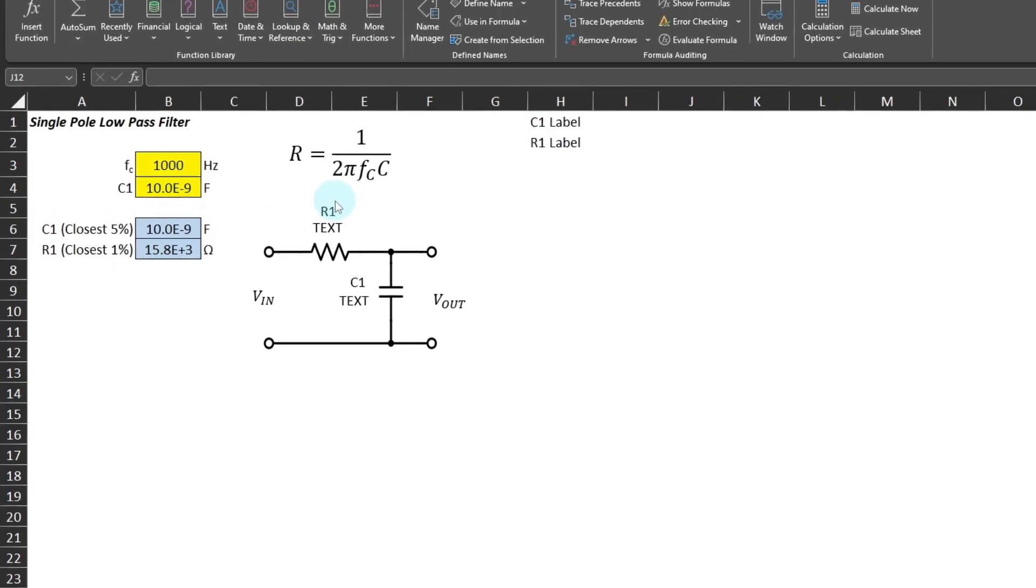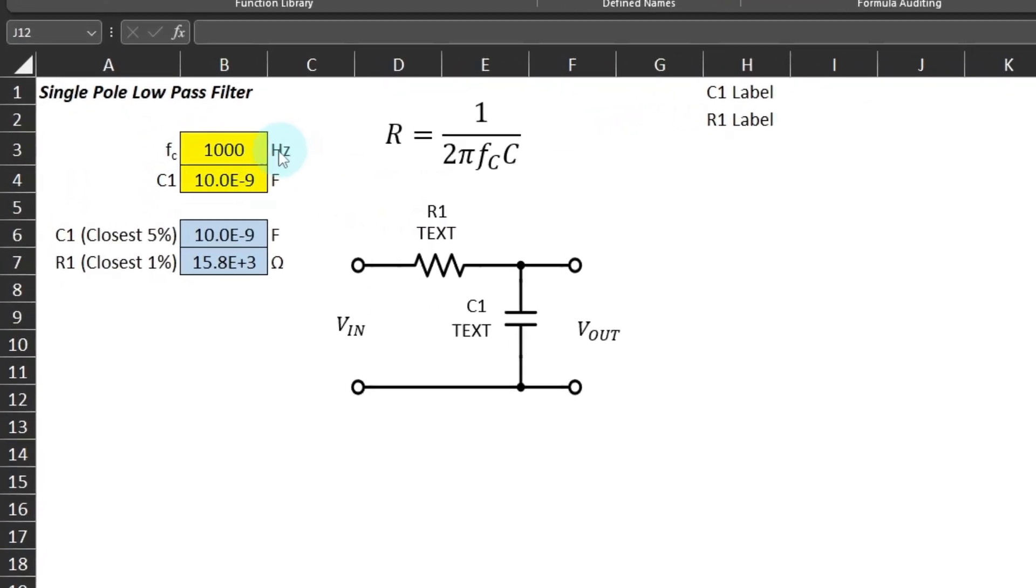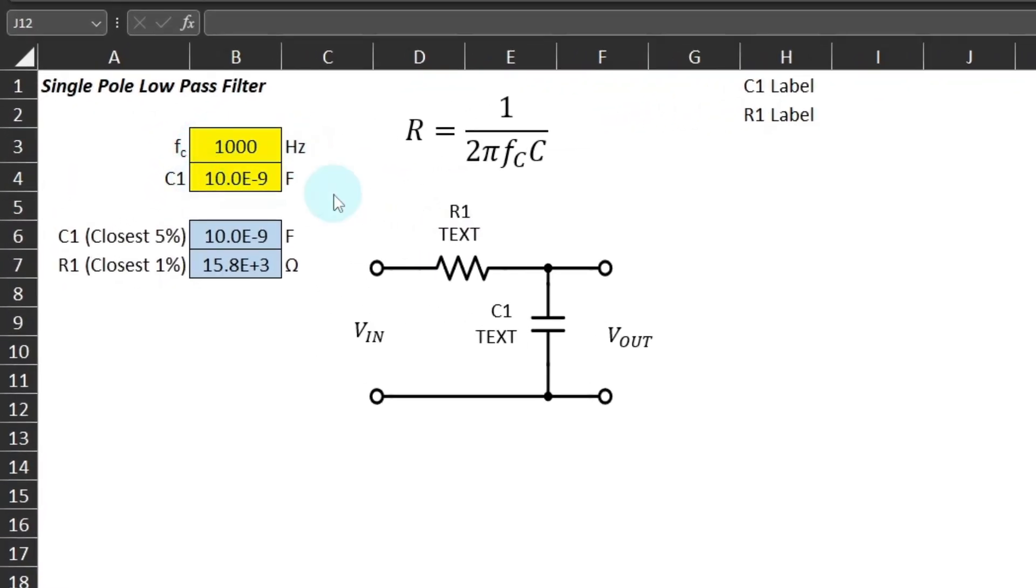Here is a very simple spreadsheet to use as an example. It calculates the resistance of a single pole low-pass RC filter based on a given capacitance input.